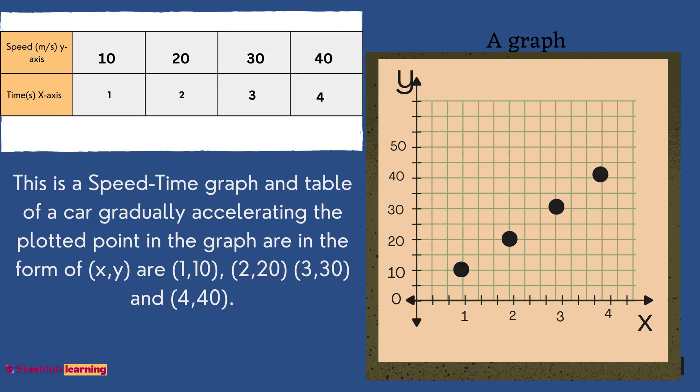This is a speed time graph in table of a car gradually accelerating. The plotted points in the graph are in the form of X and Y. That is, 1 and 10, 2 and 20, 3 and 30, and 4 and 40.